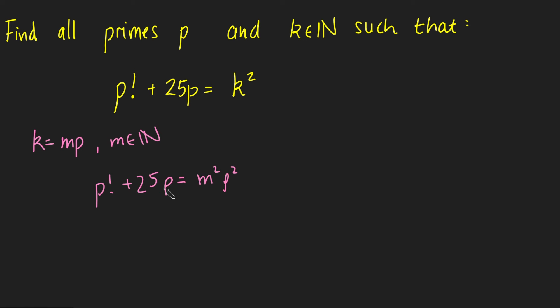But now I can just divide everything by p. So this m squared p squared becomes m squared p, 25p becomes 25, and p factorial is going to become p minus 1 factorial.